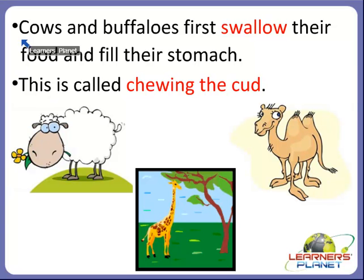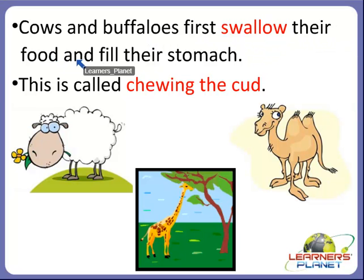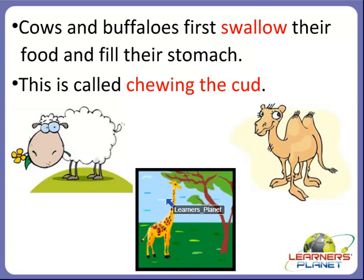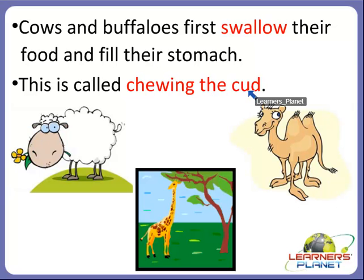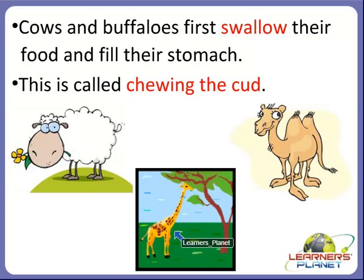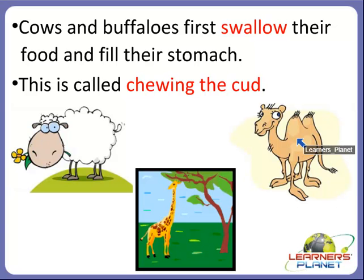There are some animals like cows who first swallow their food and store it in their stomach. Later, they bring it back into their mouth and keep chewing it for hours. This is called chewing the cud. Animals that chew the cud include sheep, giraffe, cow, buffalo and camel.